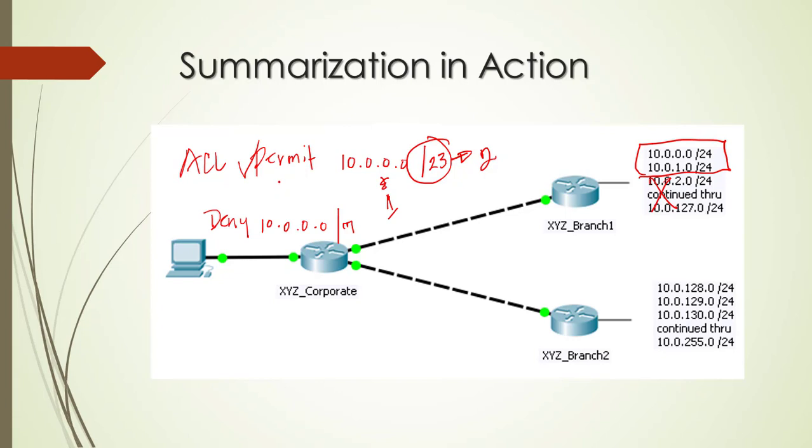if it were headed to the 10.0.3.0 network for example the permit statement here would not apply and it would process down to the deny statement and then it would be caught in this range from the zero through 127 and it would be denied.